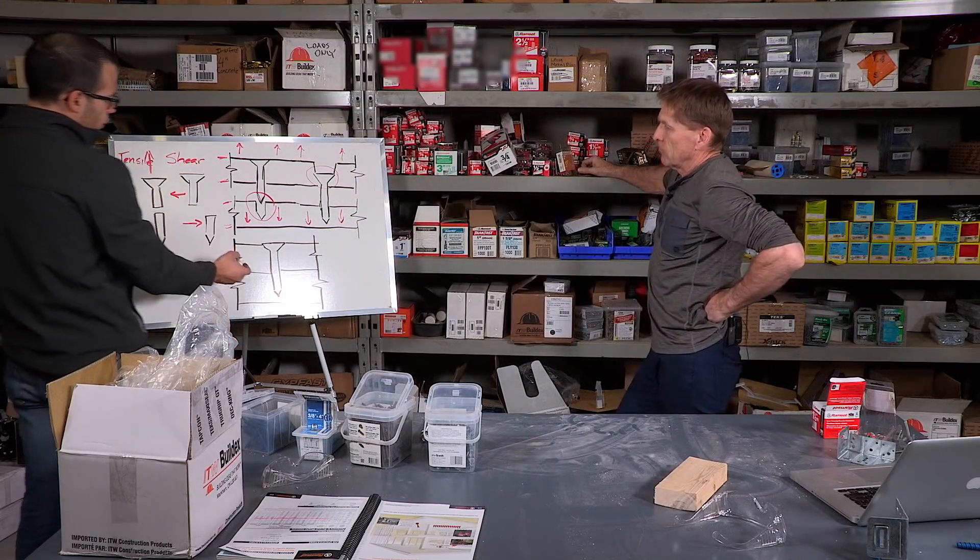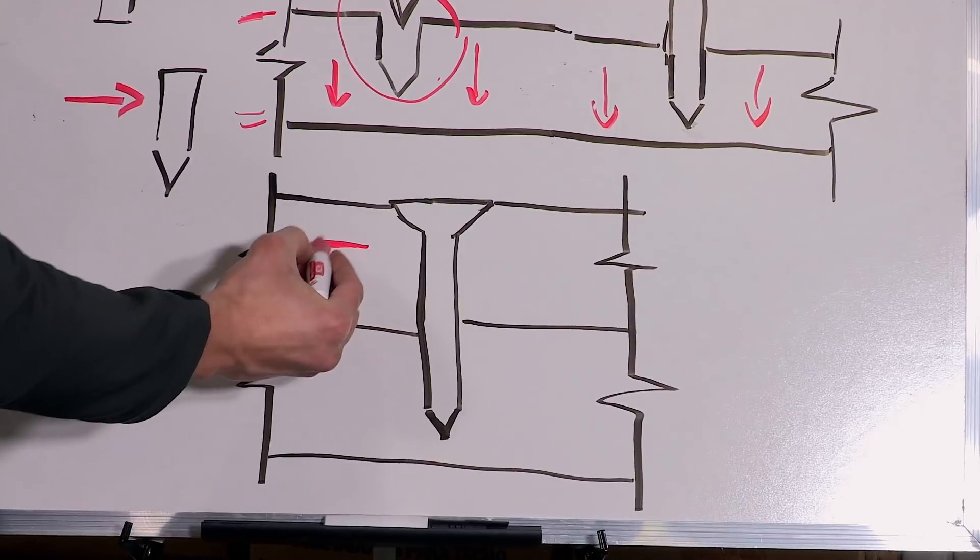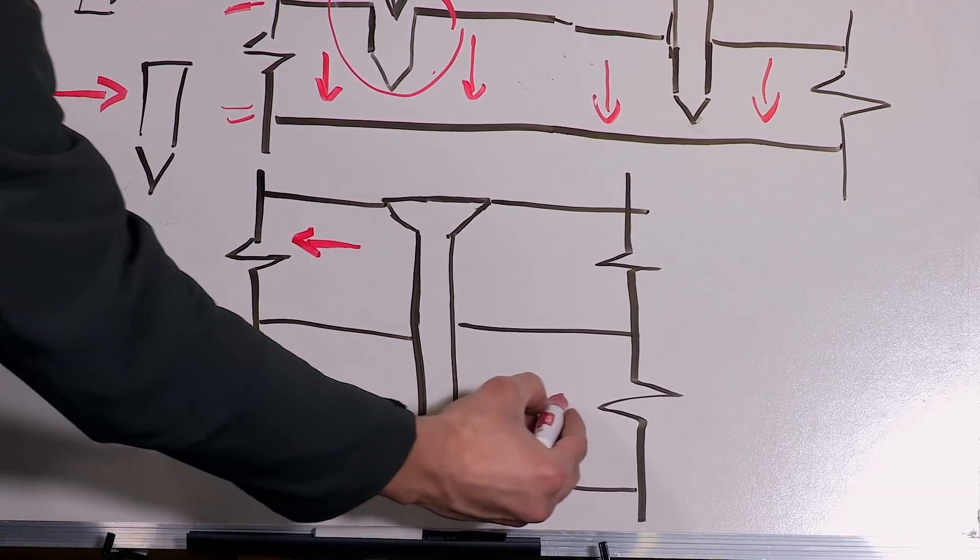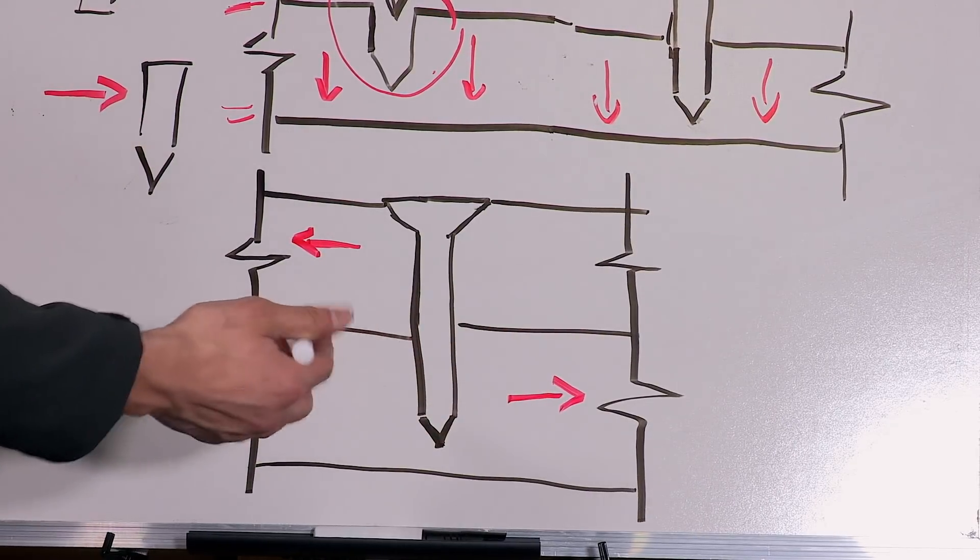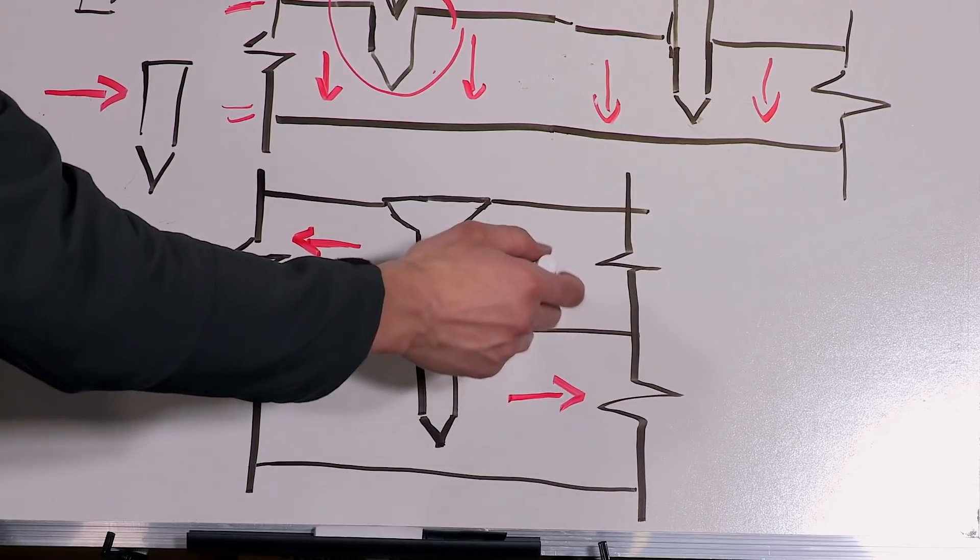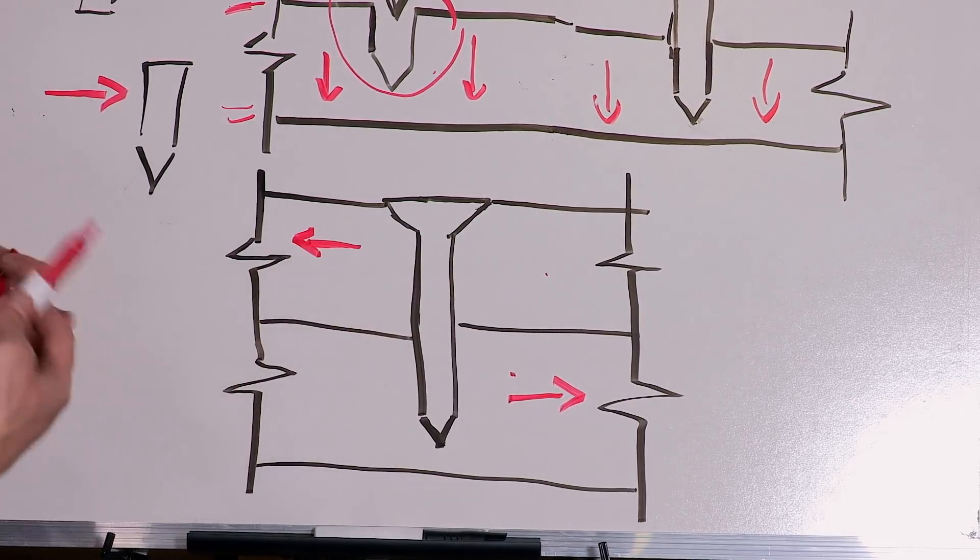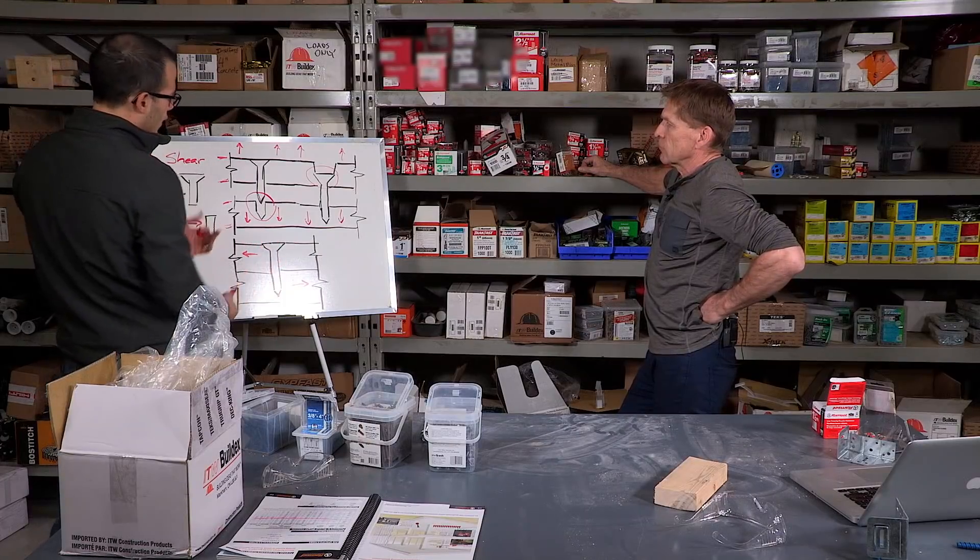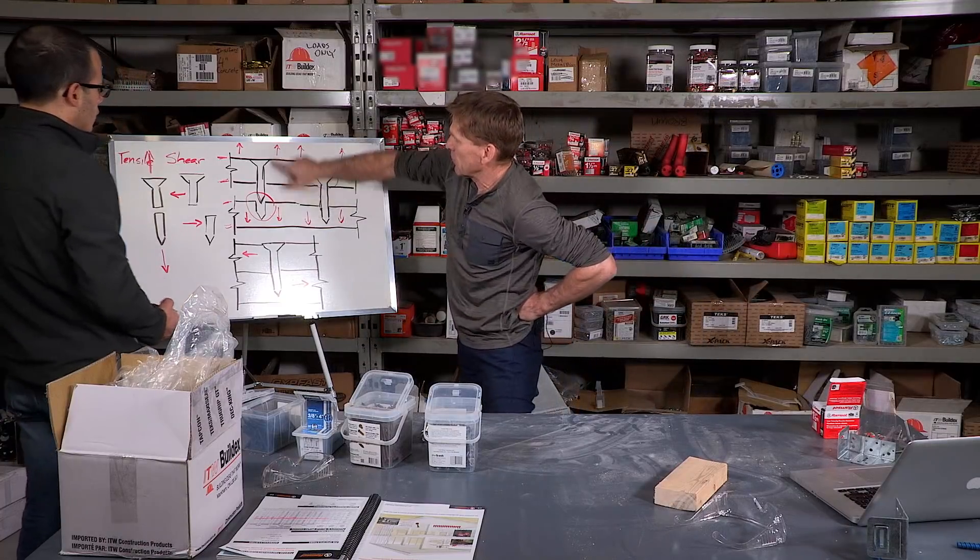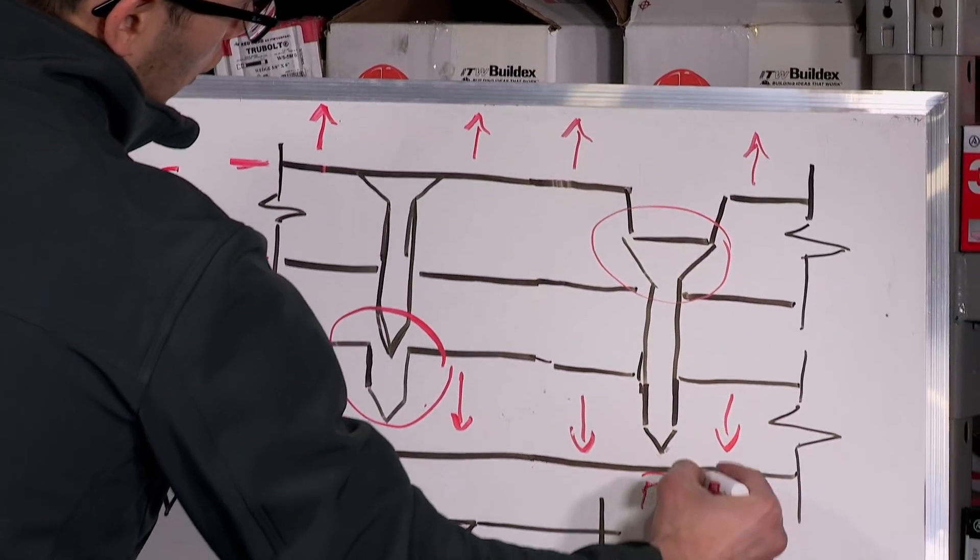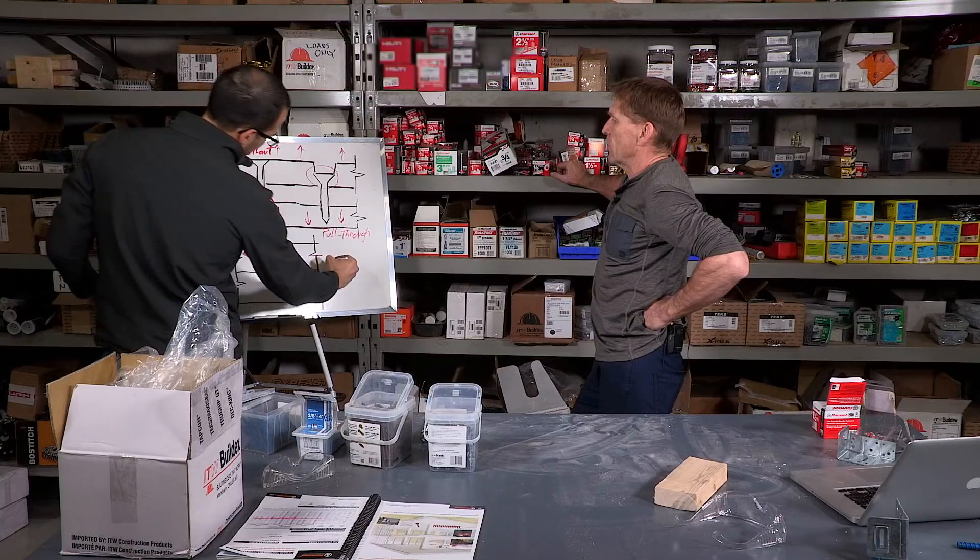And then the bottom one that we're looking at here would be how the screw performs when one wood member wants to go in one direction and the other wants to go in the opposite direction. This is called lateral strength, and basically it's going to be determined by how strong the wood is and how well designed the screw is in terms of threads and diameter - all that comes into account with this one. This one's called pull-through, the other one's called pull-out, and then this will be lateral strength here.